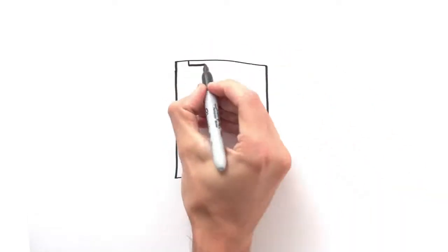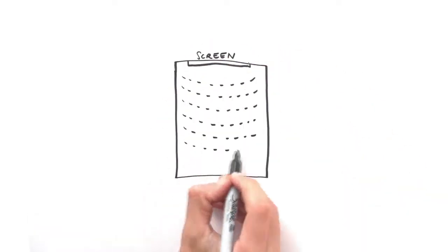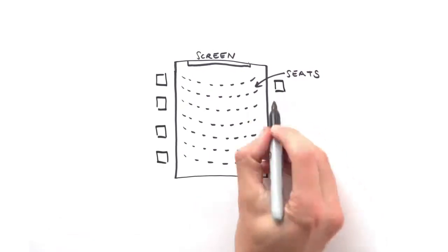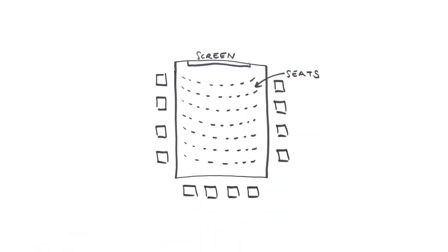Most theaters today have 5.1 surround sound, but what does that really mean? In a typical surround movie theater, you get arrays of speakers on the left and the right and the rear of the auditorium. This seems like it would be a logical recipe for surround sound, since the speakers are surrounding you.